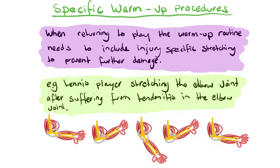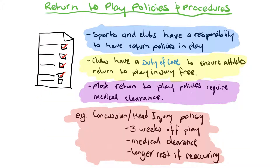The next aspect is specific warm-up procedures for athletes returning to play after injury. When athletes return to play, the warm-up routine needs to include specific stretching to prevent further damage. For example, a tennis player who suffered tendonitis in the elbow will do their regular warm-up and then perform extra stretching focused on that previously injured joint, ensuring it is as flexible and elastic as needed to perform under pressure.